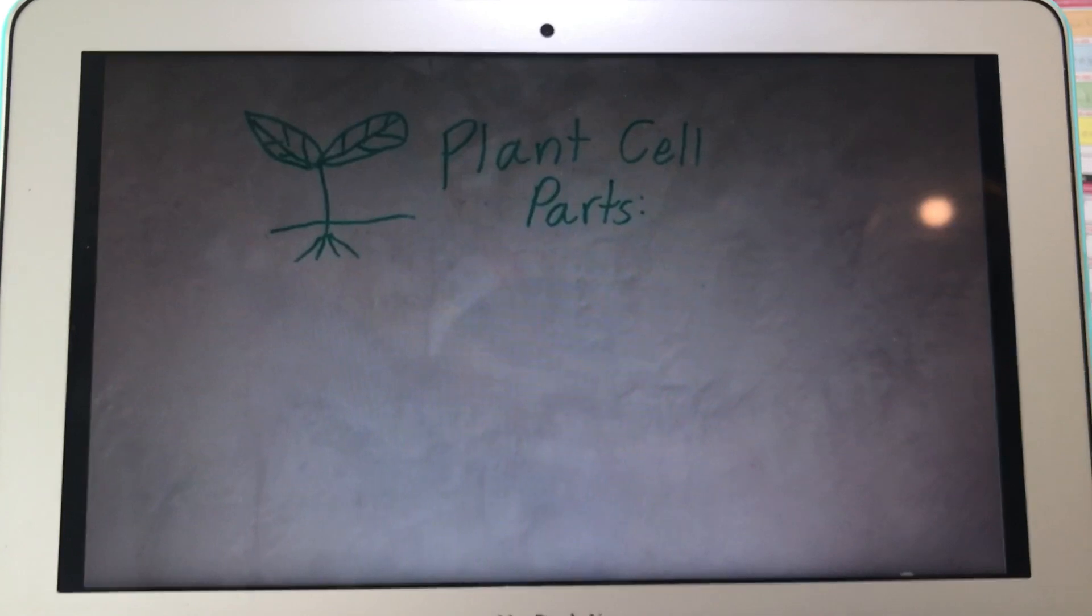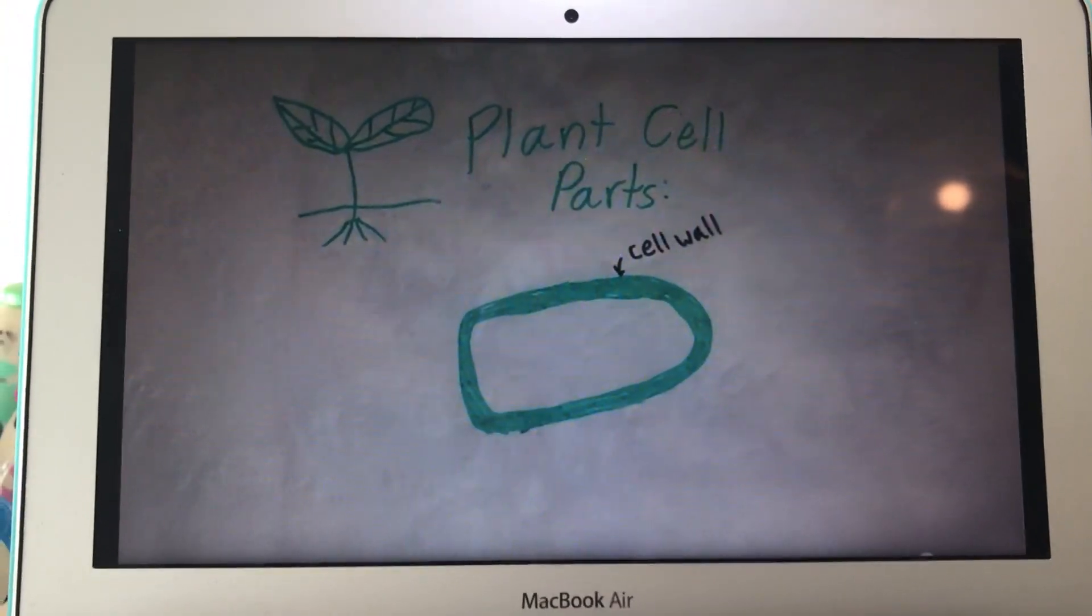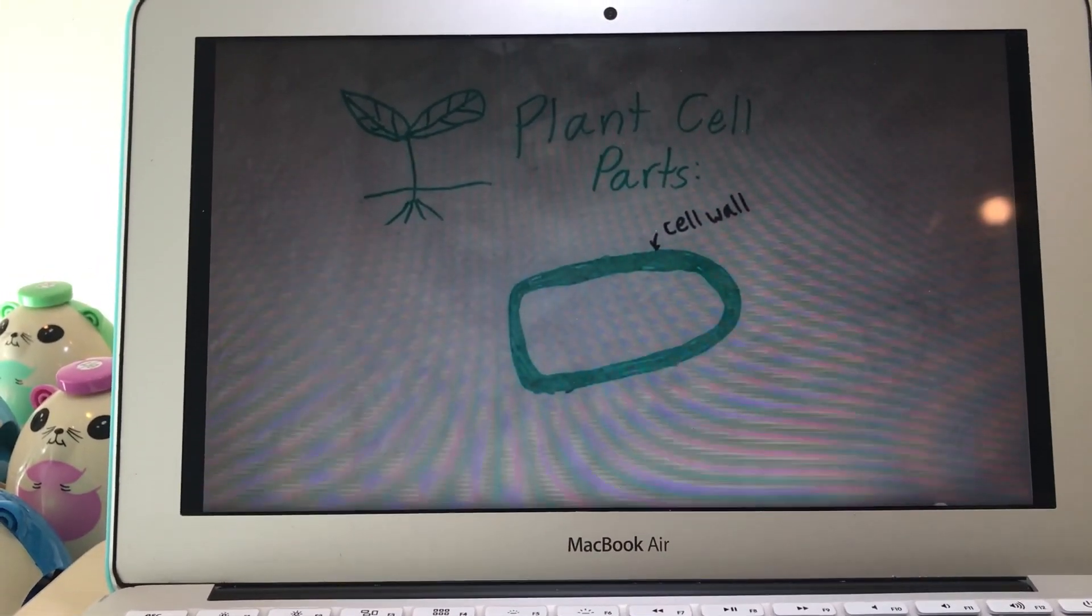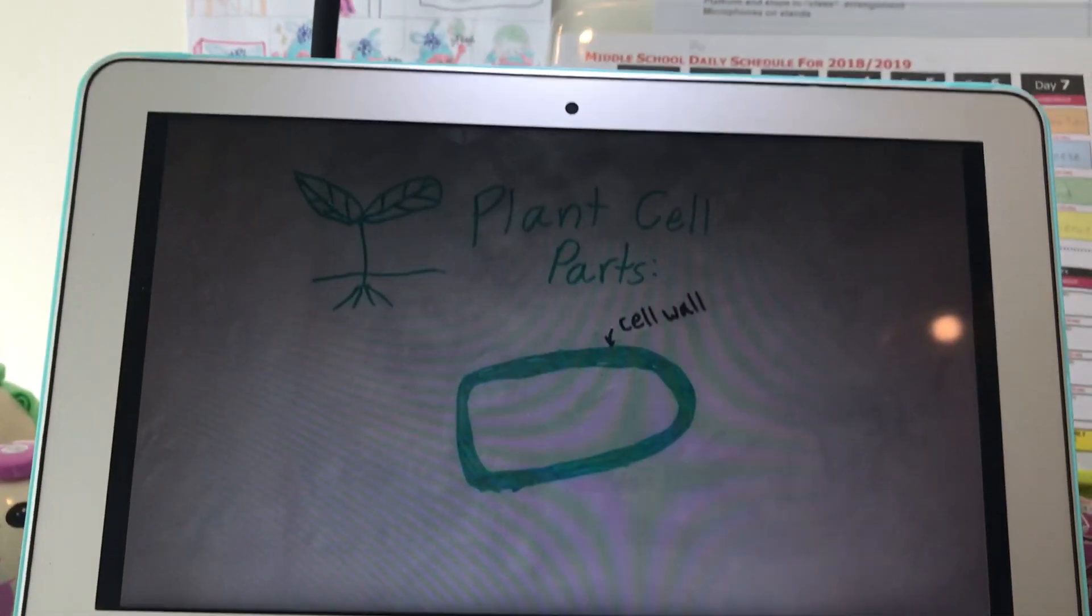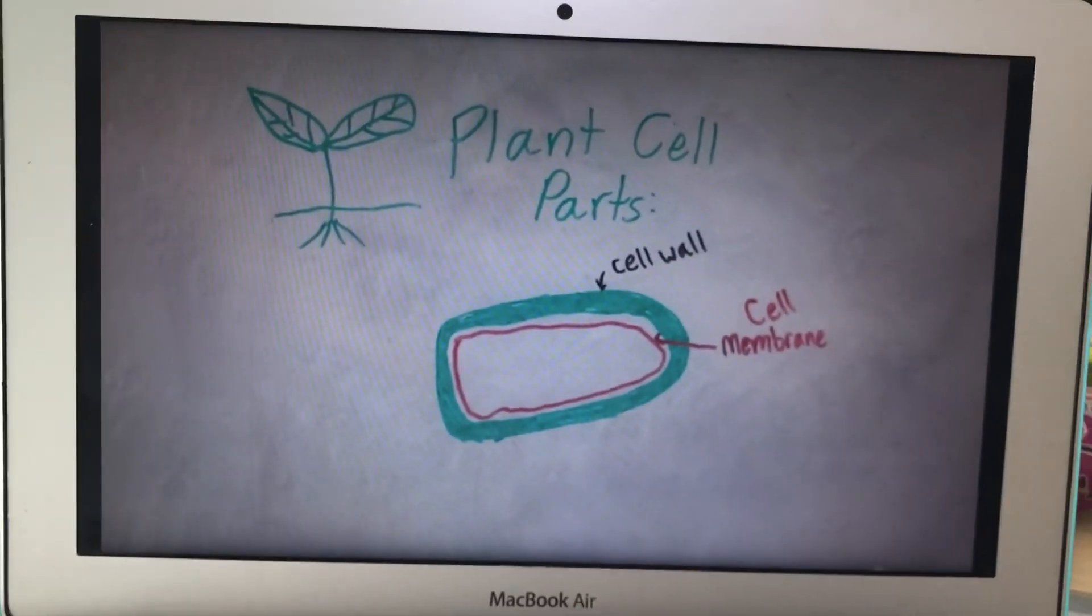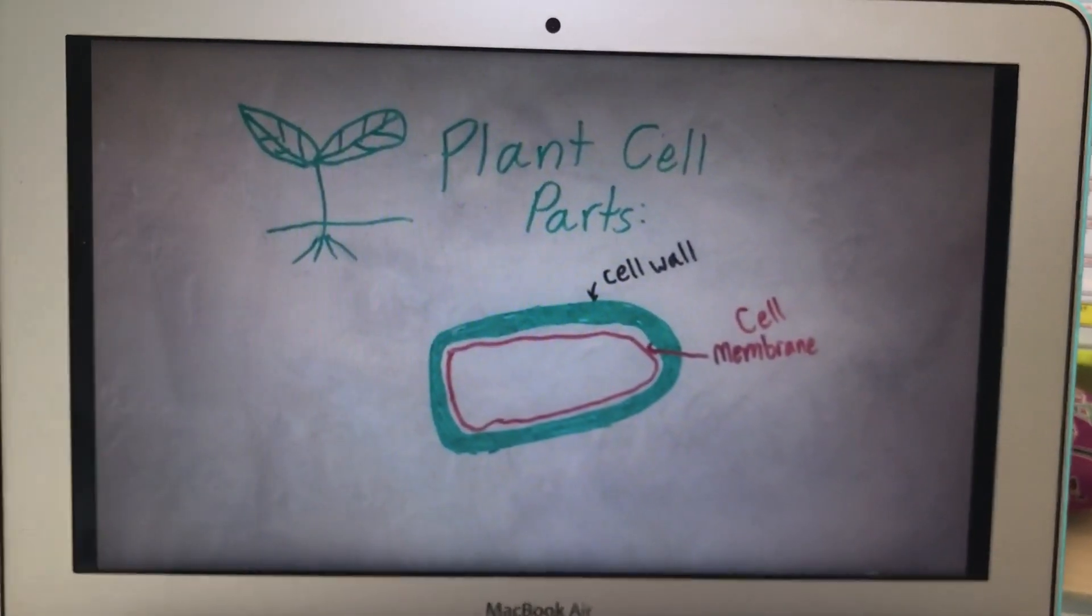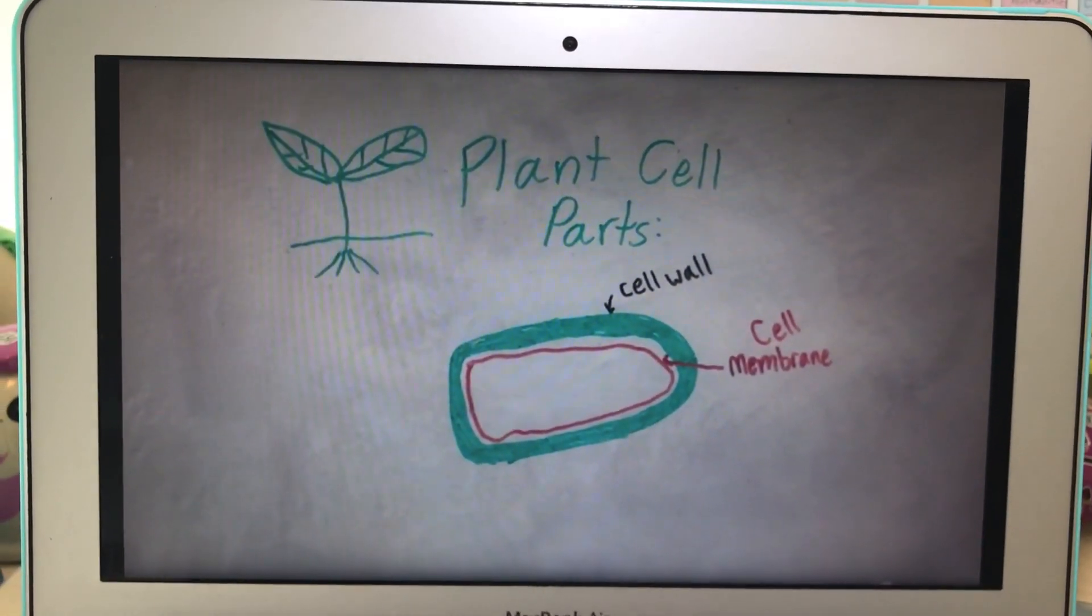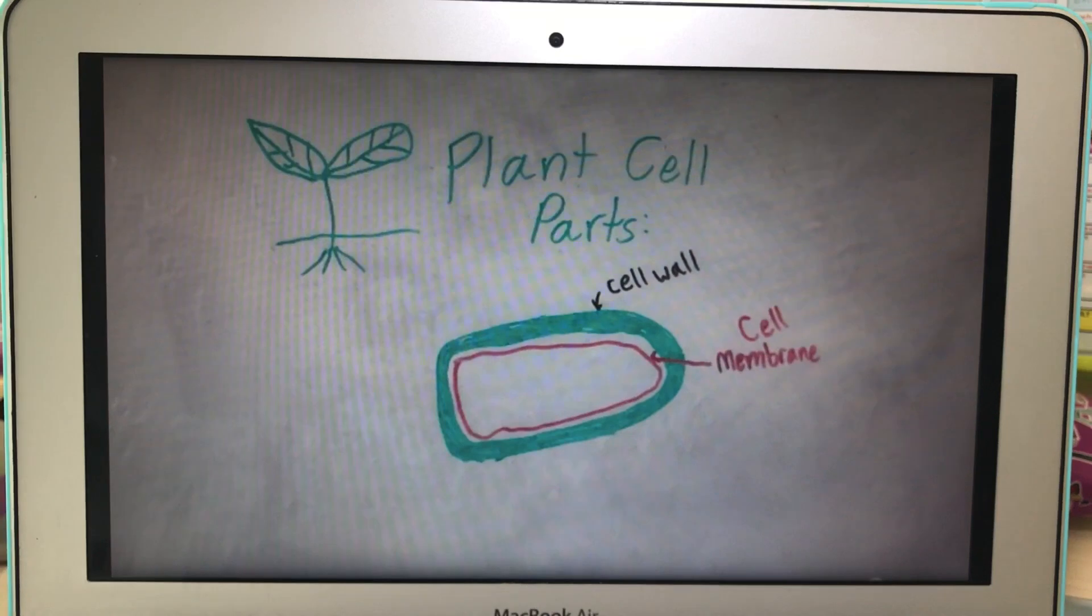Plant cell parts. Let's start from the outside digging in. First is the cell wall. It is like a barrier and gives the cell structure. Next is the cell membrane. It lets molecules in and out. It is similar to a guard or a gate.